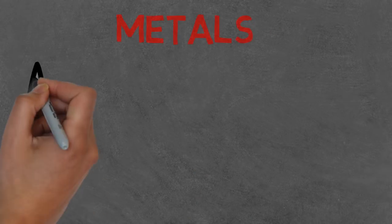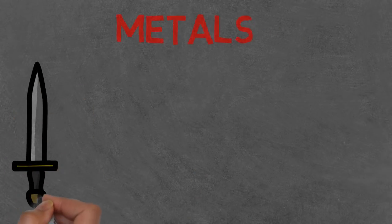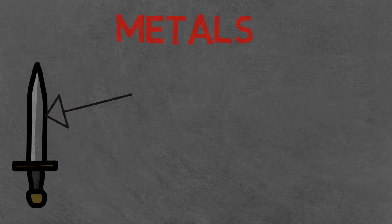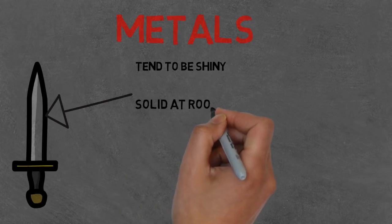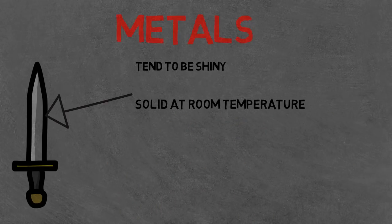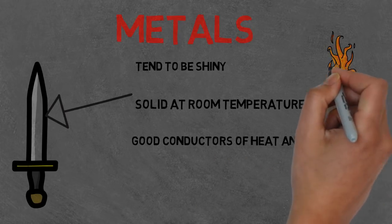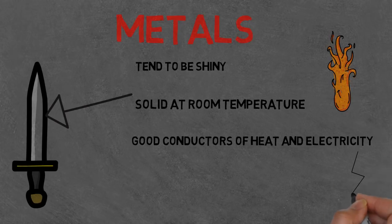Okay, so what is the difference between these two types of elements, metals and non-metals, and how can we tell the difference? Metals tend to be shiny, solid at room temperature except for mercury, good conductors of heat and electricity, and malleable, which means they can be bent into different shapes depending on what you need them for.